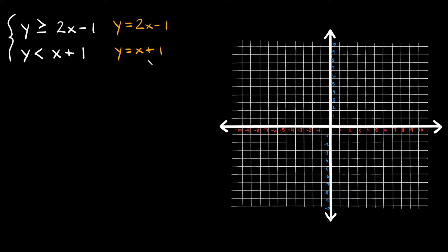There are a bunch of different ways you can graph these linear equations. The one I'm going to use is the slope-intercept form. If you don't remember, that's this equation: y is equal to mx plus b. The b at the end is your y-intercept, and m is your slope.